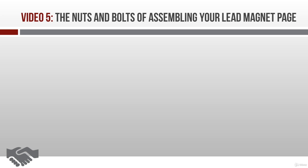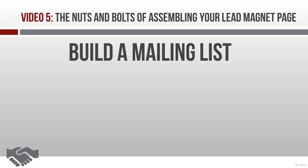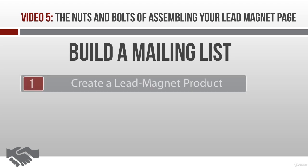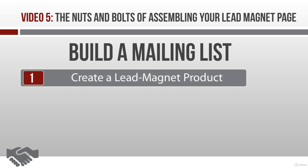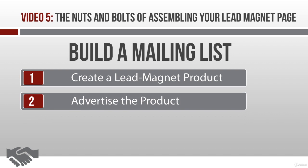One of the steps on the path to becoming a successful affiliate is to build a mailing list, which means you need to create a good lead magnet product as bait, and then advertise this enticing freebie on your lead magnet page.